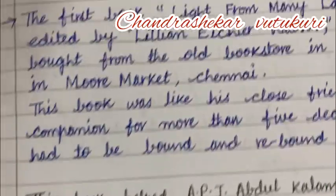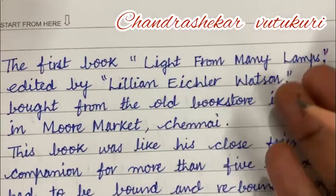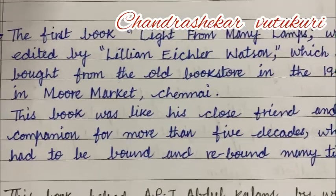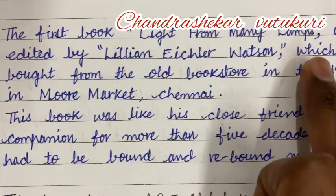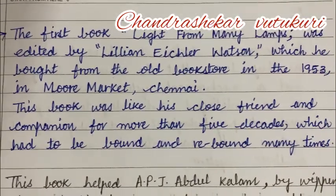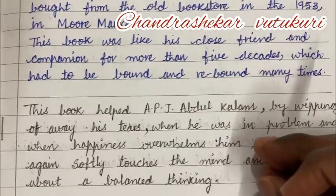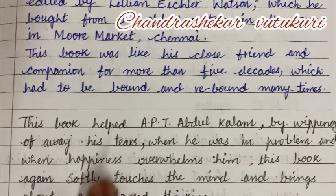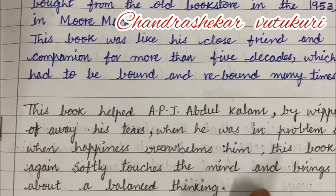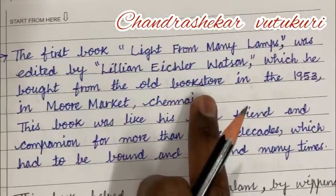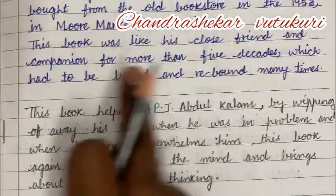Then you need to write about the first book — what it is about, who wrote it, and what made him study it. Try to understand and look at the way I have written: how to use inverted commas, commas, full stops, and question marks wherever required. I have written what made him influenced by this book in a different pen color. This book helped APJ Abdul Kalam by wiping away his tears when he was in trouble and when happiness overwhelmed him. It softly touches the mind and brings about balanced thinking.